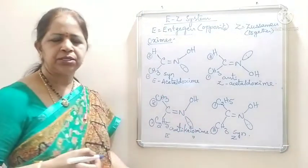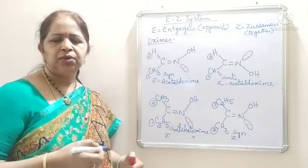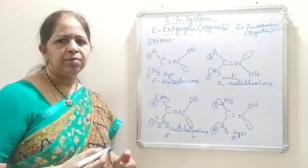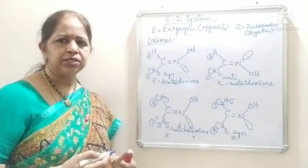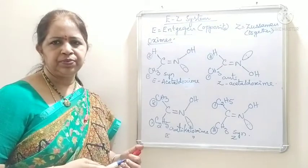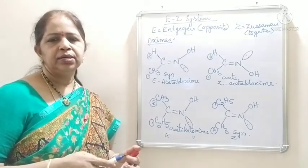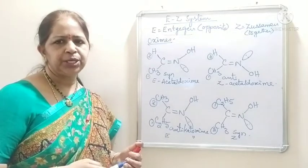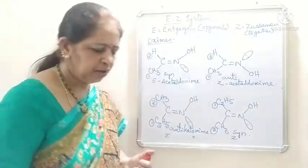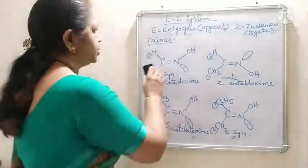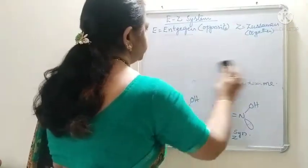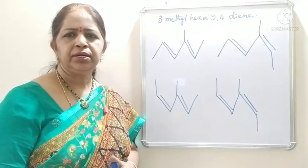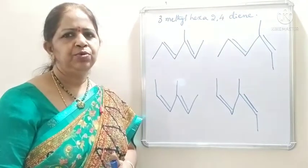Got the point, students? Like this, we can assign EZ configuration to normal alkenes and also to oximes, and we can combine cis-trans isomerism with EZ isomerism also. Now let us see another example. Let us assign EZ configuration to polyenes.